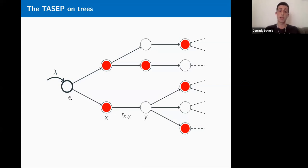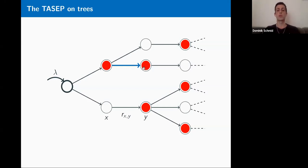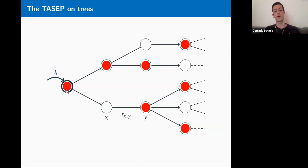In order to implement the TASEP structure, particles can only jump in the direction pointing away from the root. In contrast to the simple model shown before, we allow for general rates r_{xy}. A particle at site x jumps under the exclusion rule to a site y — if the target is occupied, the move is suppressed. Additionally, at rate lambda under the exclusion constraint, particles are generated at the root. Our goal is to ask the questions from before for this model of TASEP on a tree.